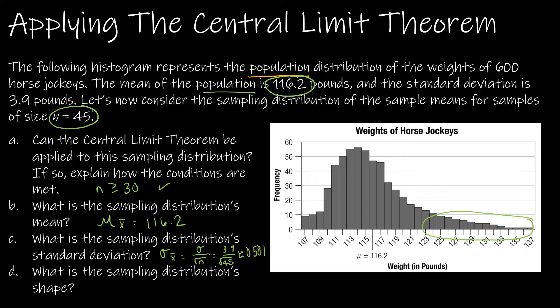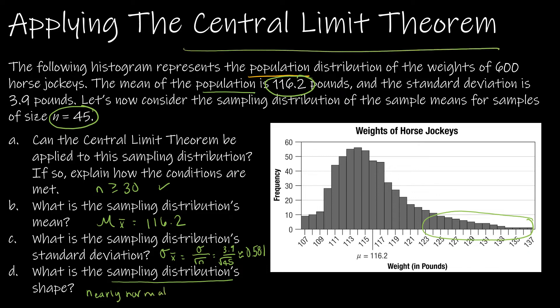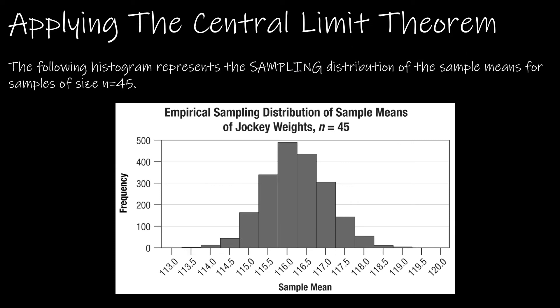What is the sampling distribution's shape? The population shape is skewed right, but the sampling distribution shape is going to be nearly normal. And that is the beauty of the central limit theorem — if I create a histogram using the sampling distribution of sample means for samples of size 45, I now get a nearly normal distribution.